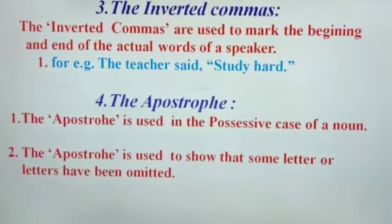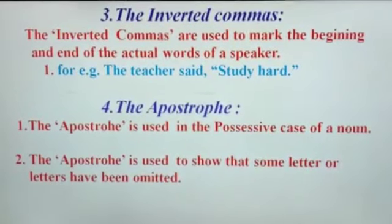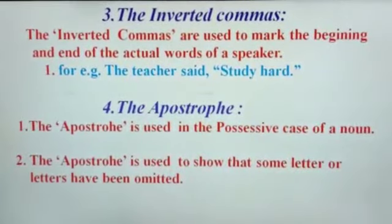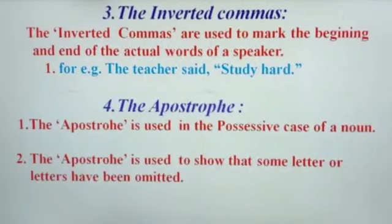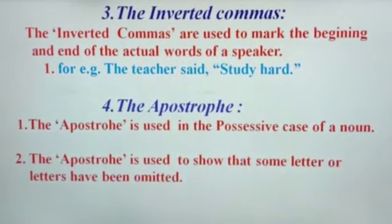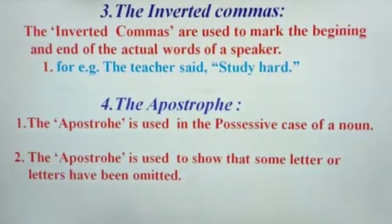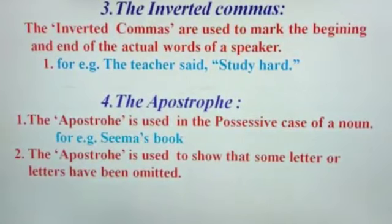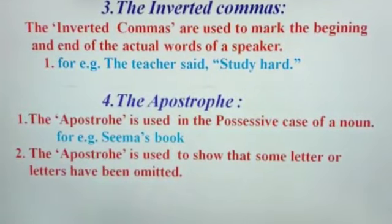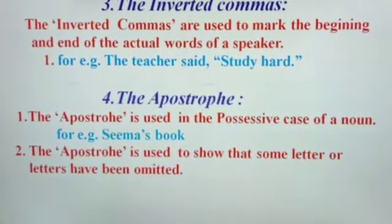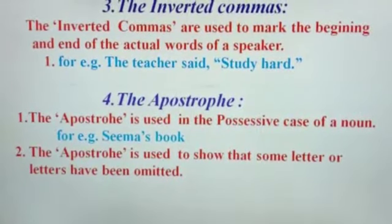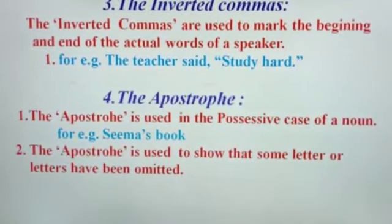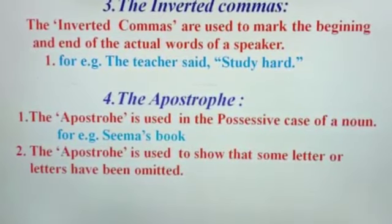Our next punctuation mark is the apostrophe. The apostrophe is used in the possessive case of a noun. For example, 'Seema's book.' Here, after 'Seema' there is an apostrophe s.